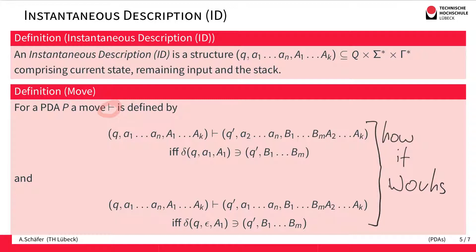The first move actually reads something from the input. If we have an ID where the next input symbol is a1, we are in current state Q, and the stack top is A1, then we check the transition function for possible transitions. If we can take a transition leading to Q' that replaces A1 by B1 to BM, we end up in the new ID: we have changed state from Q to Q', consumed a1 from the input, and replaced A1 by B1 to BM on the stack continuing with A2. Note that B1 to BM can be the empty word, in which case we simply continue with A2.